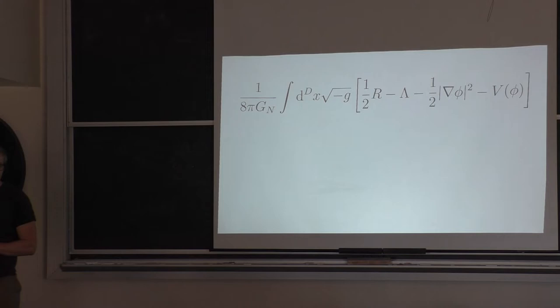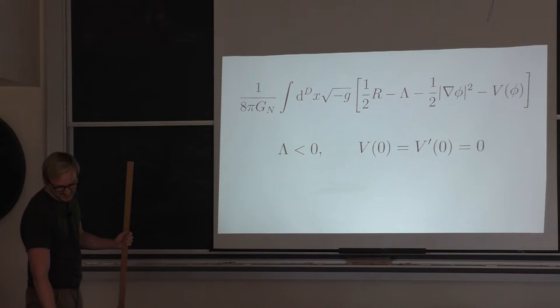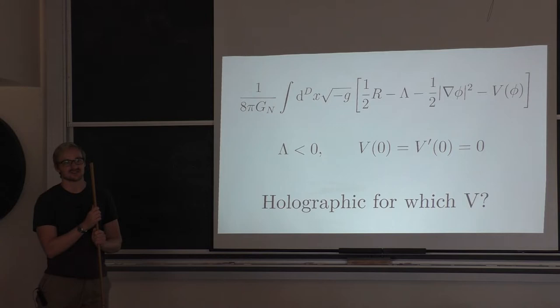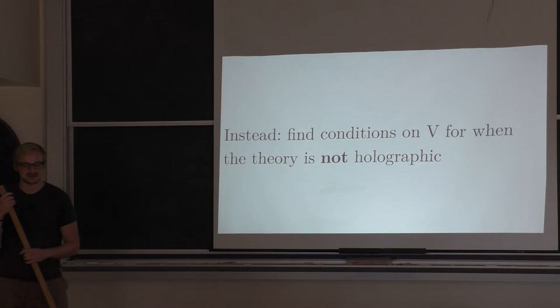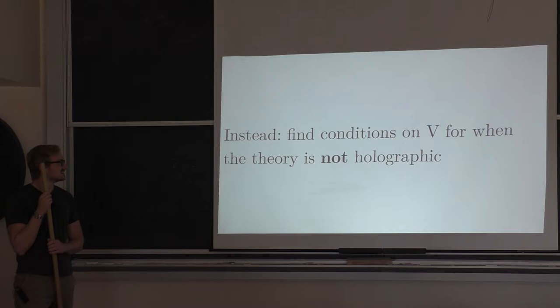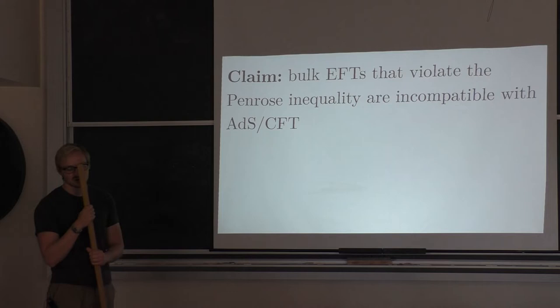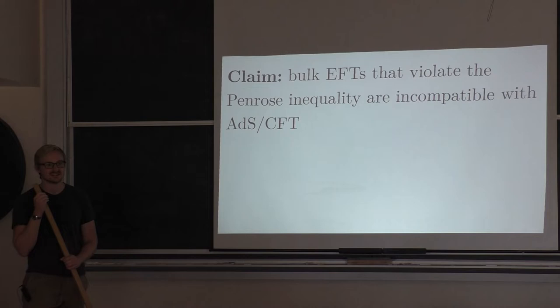That question is too hard, so let me restrict to scalar theories and consider a minimally coupled scalar with an AdS vacuum at phi equals zero. We can ask for which potentials could this theory be holographic. That question is still too hard. So what I'm going to do is find conditions on the potential V for when the theory is not holographic. The claim I'll make is that bulk effective field theories in AdS that violate the Penrose inequality are incompatible with AdS/CFT.